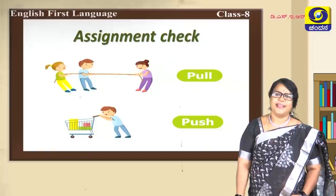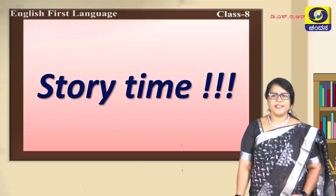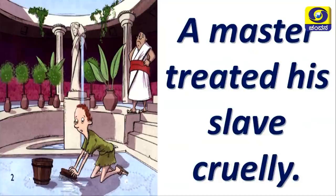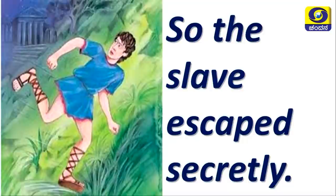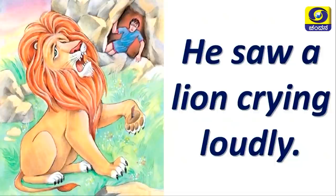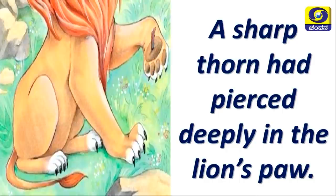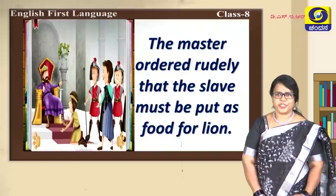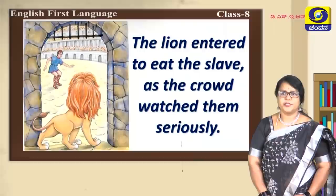Here we are going to listen to a story. It is story time! The story is all about the slave and the lion. A master treated his slave cruelly, so the slave escaped secretly. The whole night he slept quietly in a cave. He saw a lion crying loudly. A sharp thorn had pierced deeply in the lion's paw. The master ordered rudely that the slave must be put as food for the lion.